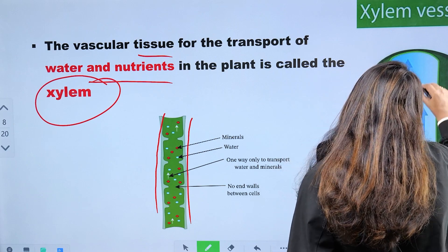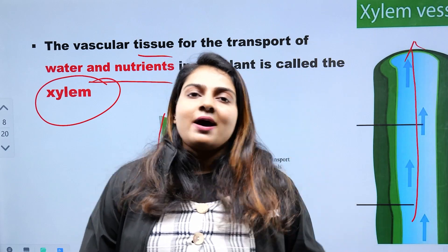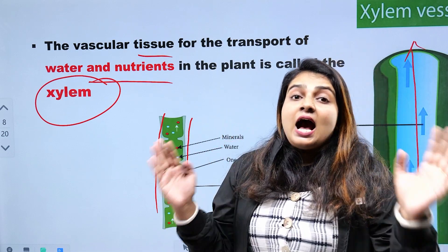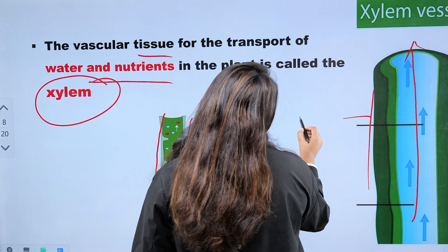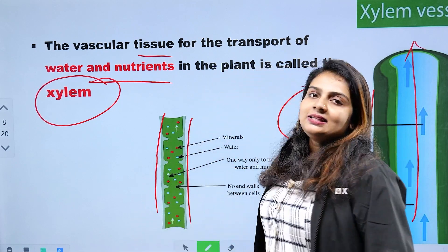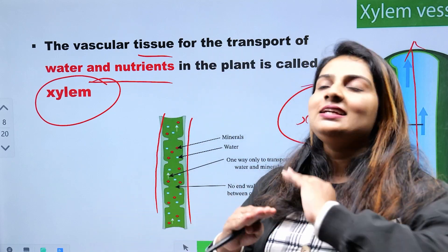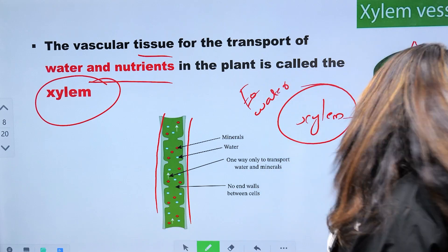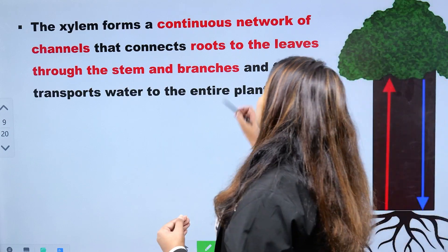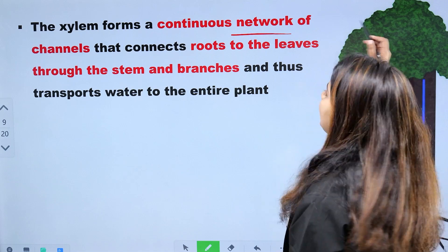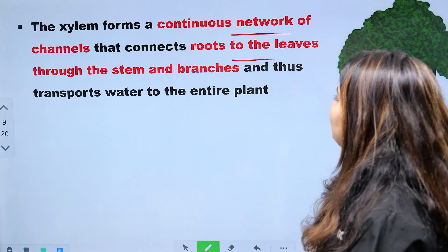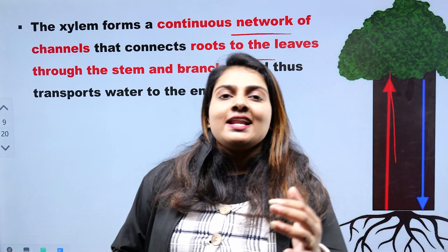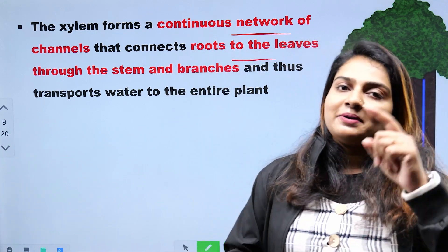This structure transports water and minerals. The roots, branches, leaves, and all the parts of the plant are connected by pipe-like structures called vascular tissues. Xylem is a continuous network of channels that transports water throughout the plant.